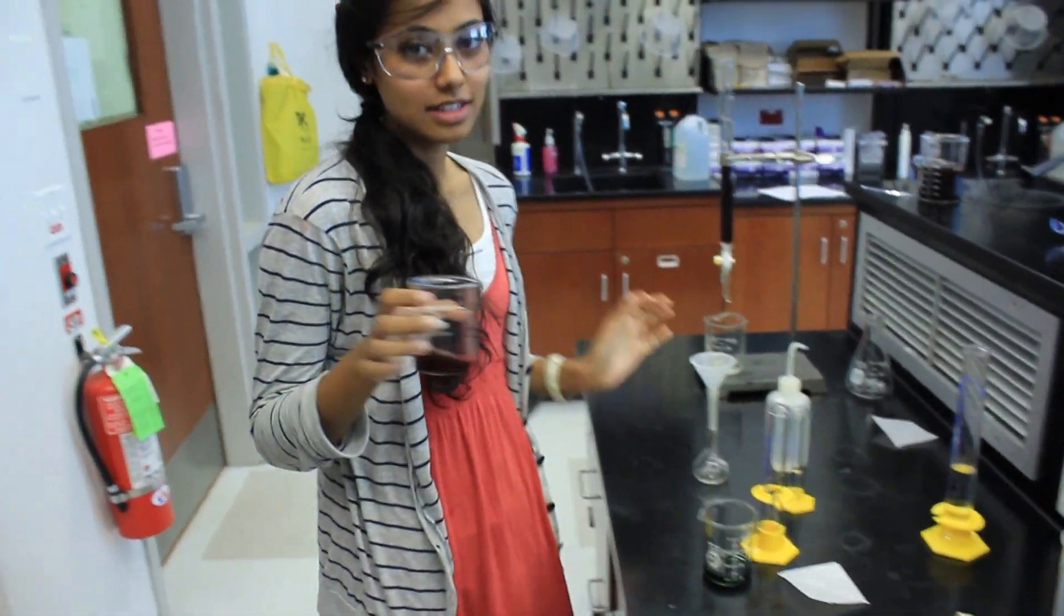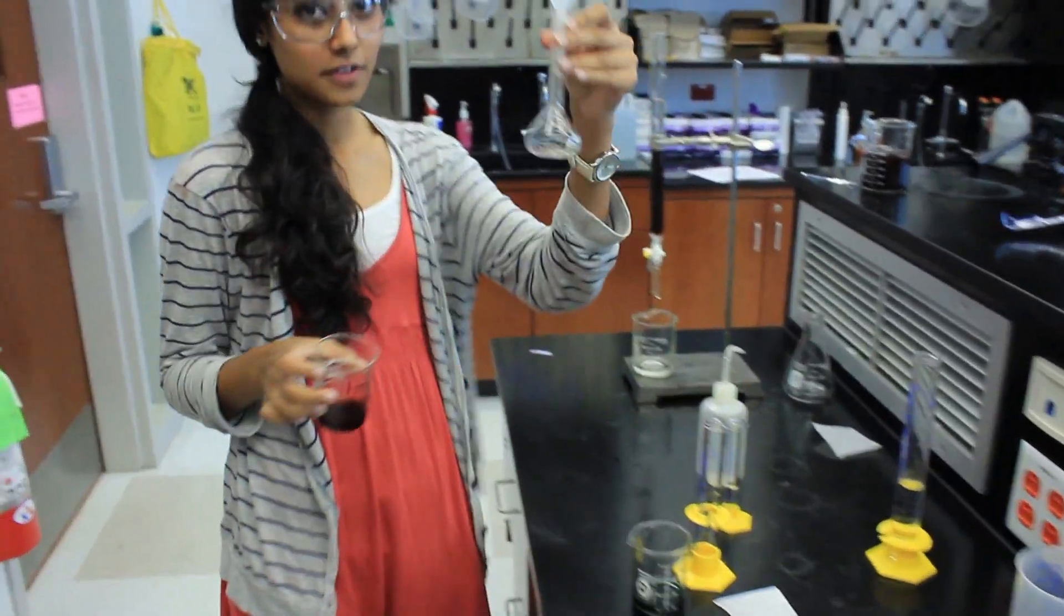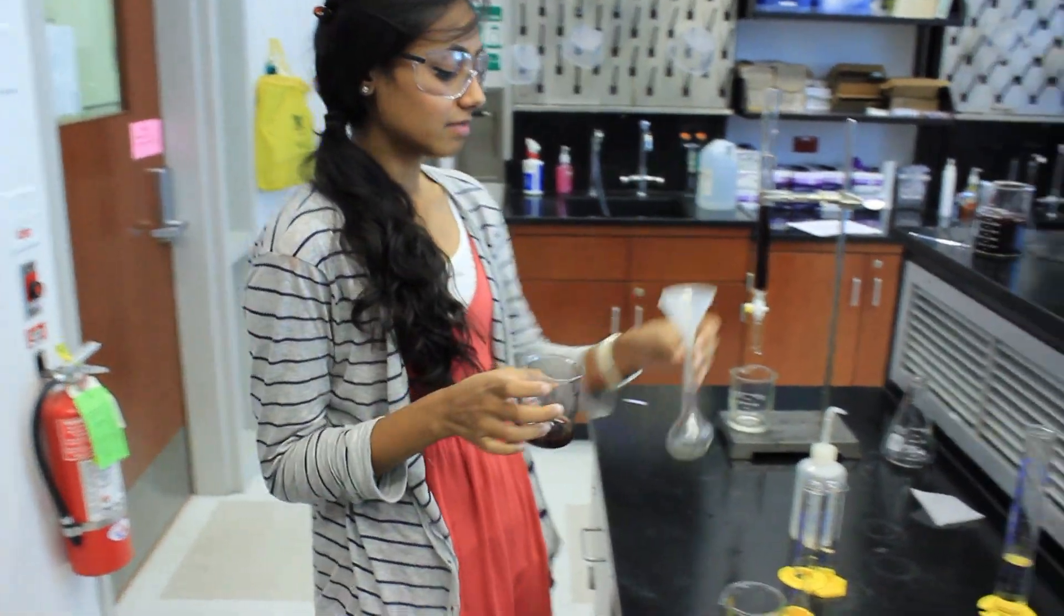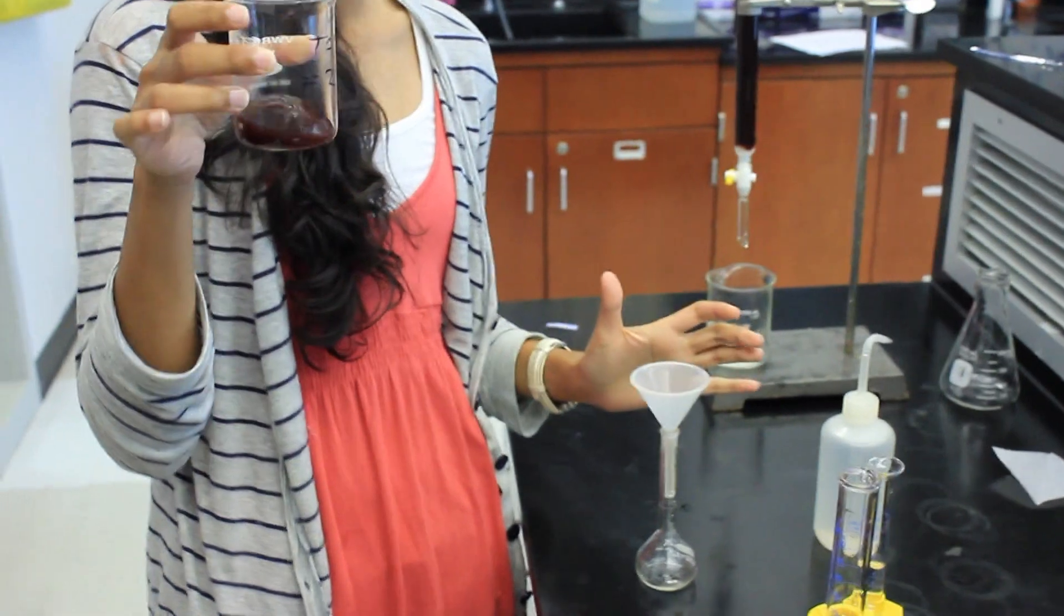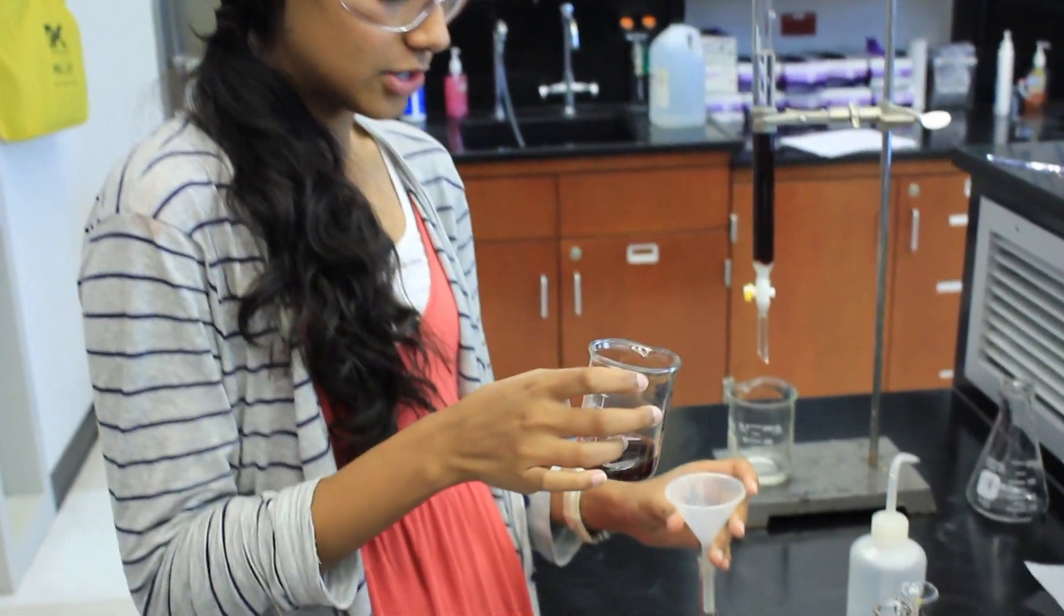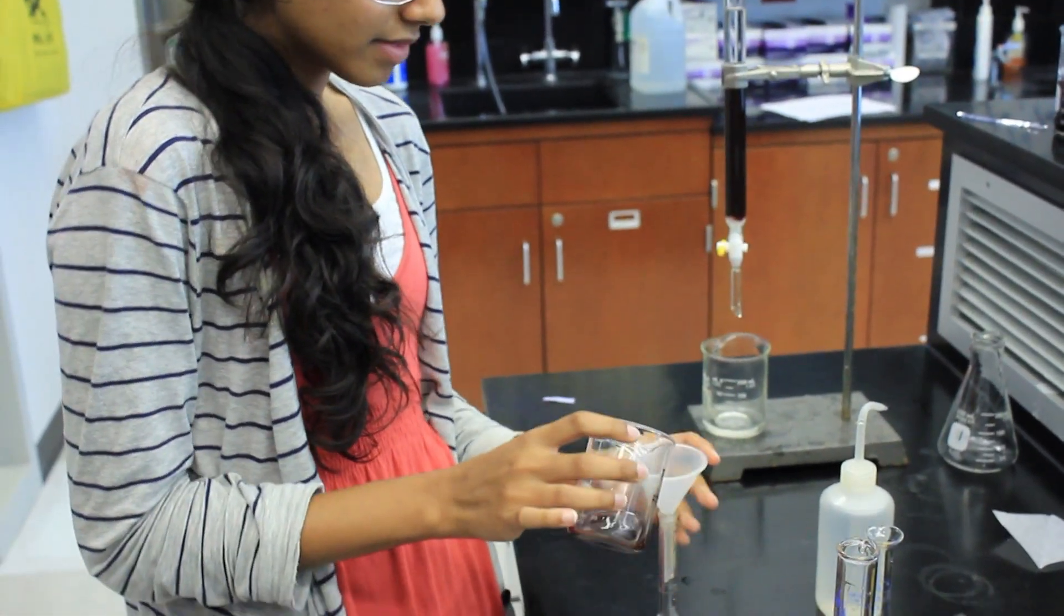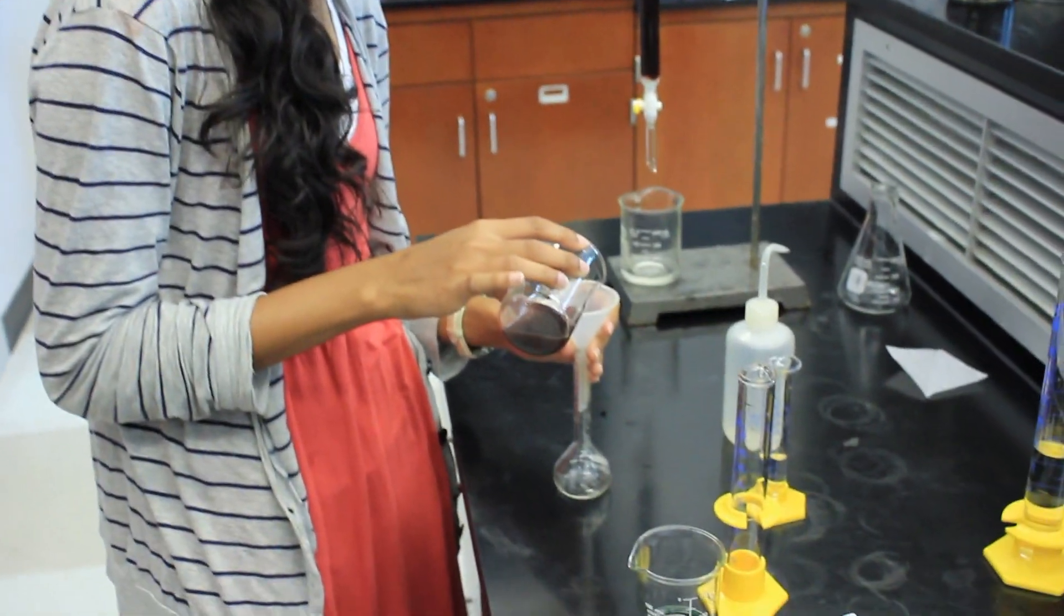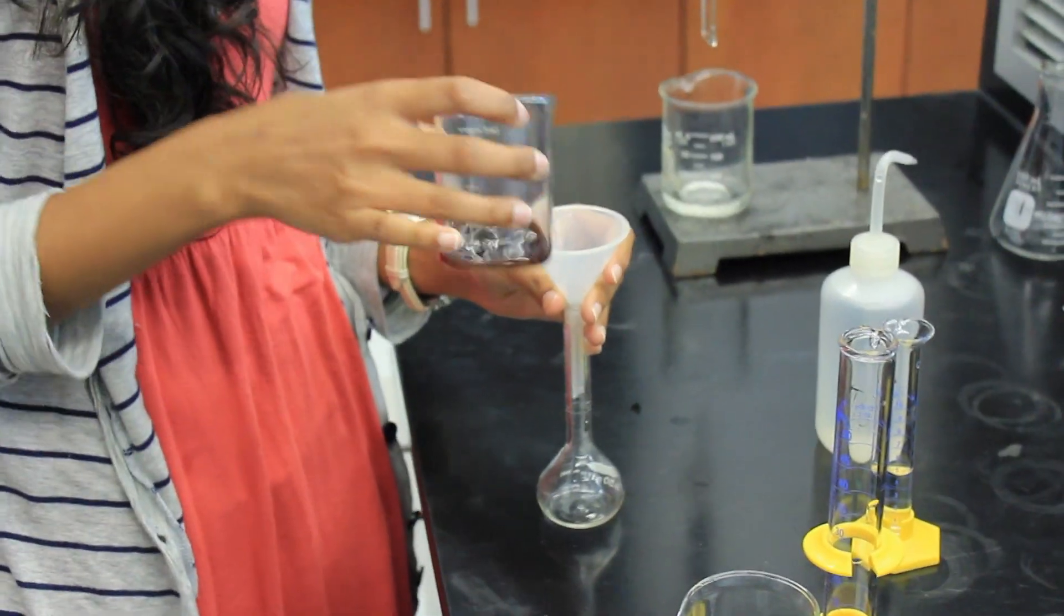Now we're going to pour this solution into your 50 milliliter volumetric flask. And make sure to not let any of the zinc get into the flask. Make sure to stir it up a little before you go.